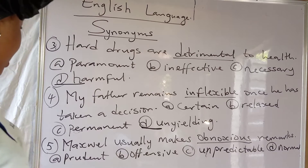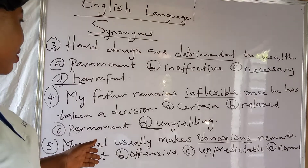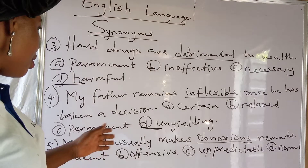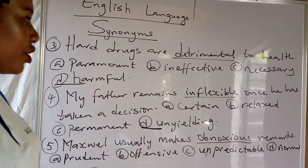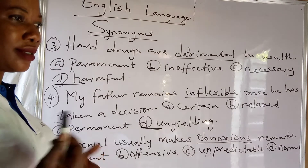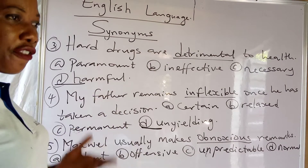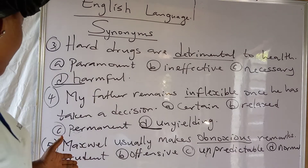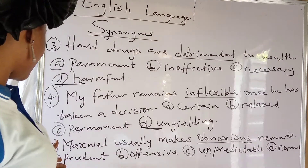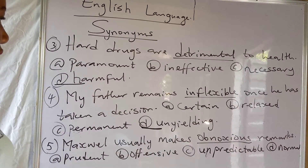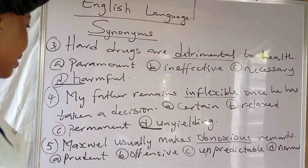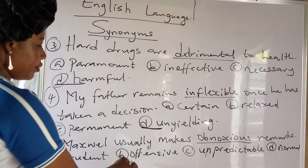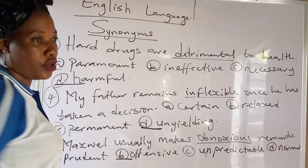The last one: Magza usually makes obnoxious remarks. When something is obnoxious, it means something that is offensive. The options are: prudence, offensive, unpredictable, and normal. The answer is 'offensive.' Thank you.